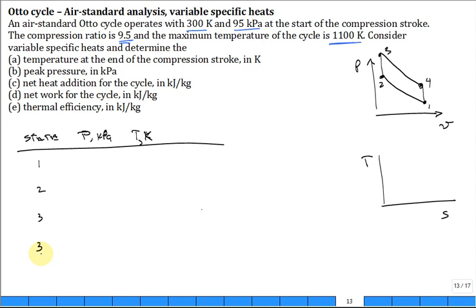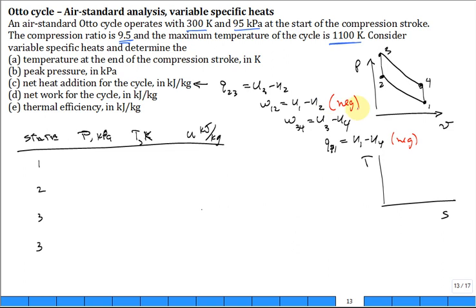Make a table of properties with temperature and pressure. We recall that for thermal efficiency, network, heat addition - Q2 to 3 equals U3 minus U2. The work 1 to 2 is U2 minus U1, work 3 to 4 is U3 minus U4, and Q4 to 1 equals U1 minus U4. We know that we need those U's.